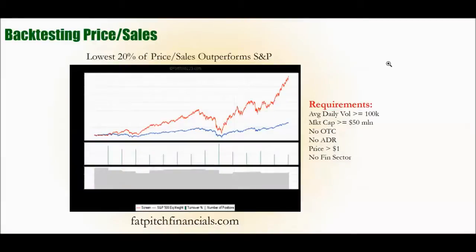Speaking of back-testing, fatpitchfinancials.com conducted a study going back to the year 2000 — a 13-year period. They eliminated a whole bunch of criteria: stocks with a market cap of at least $50 million, average daily volume of at least 100,000 shares, no OTC stocks, no ADR stocks — basically stocks listed on the New York Stock Exchange or NASDAQ in the U.S. — prices at least $1 per share, and they removed the entire financial services sector. That left them with about 3,300 stocks.